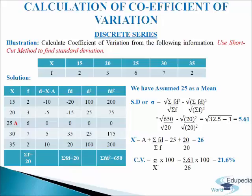We add up the values and get sigma F equals 20. In the third column d equals x minus a. So 15 minus 25 gives minus 10; 20 minus 25 gives minus 5; 25 minus 25 gives 0; 30 minus 25 gives 5; 35 minus 25 gives 10. In the fourth column we write Fd, multiplying frequency by deviation: 2 times minus 10 gives minus 20; 3 times minus 5 gives minus 15; 6 times 0 is 0; 7 times 5 gives 35; 2 times 10 gives 20. We add up to get sigma Fd equals 20.